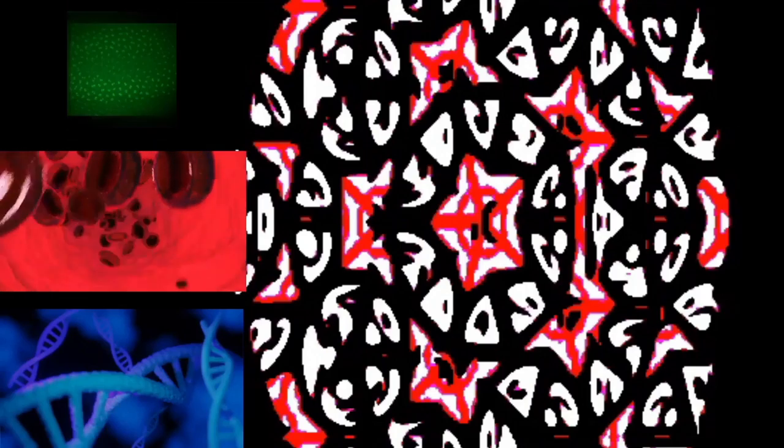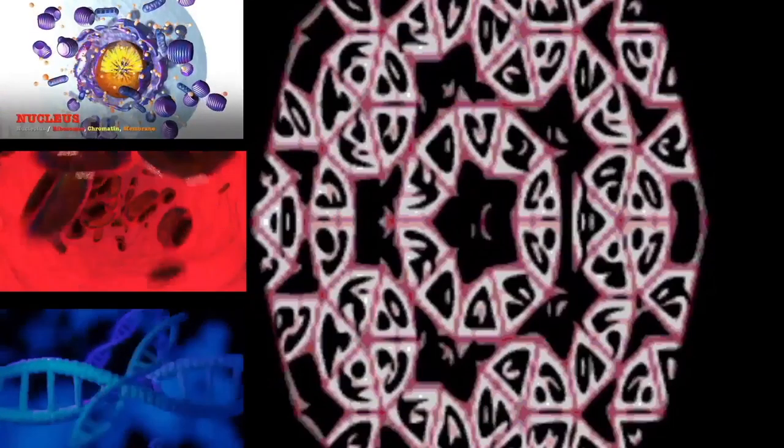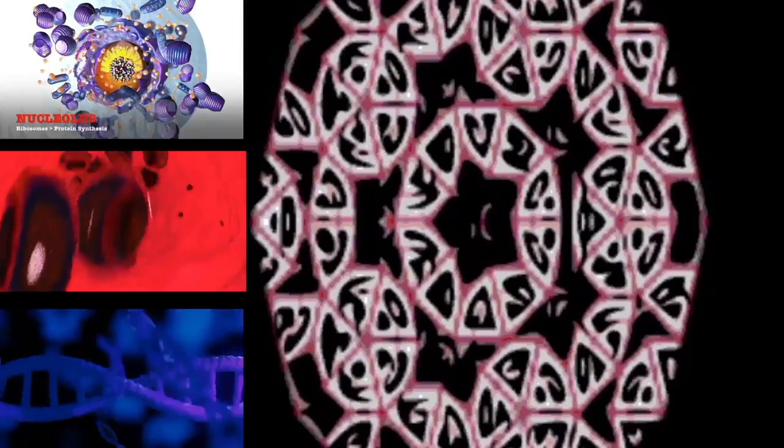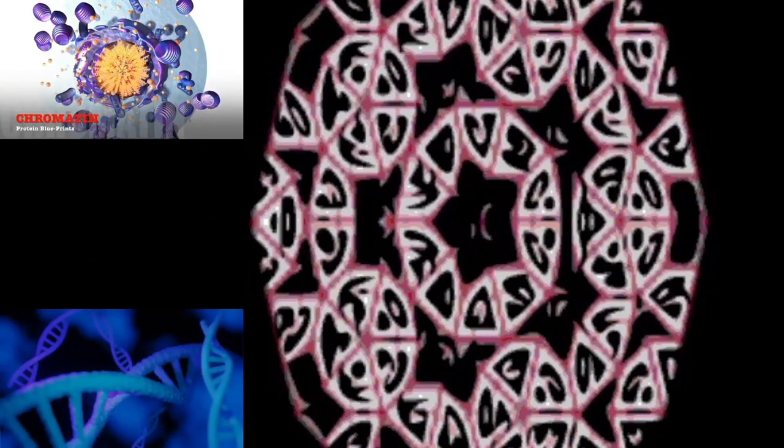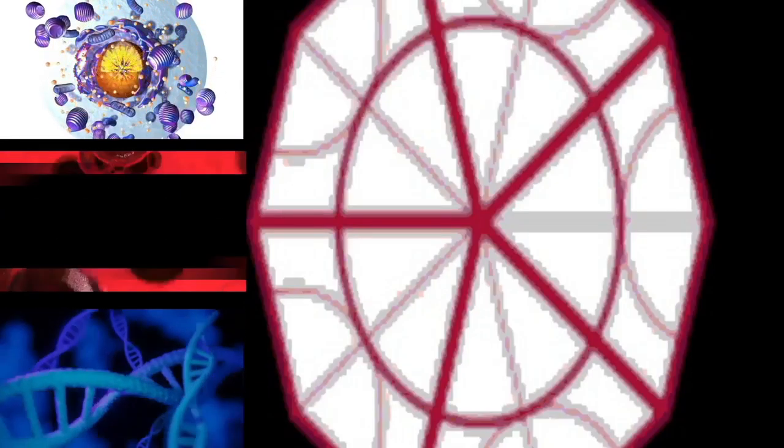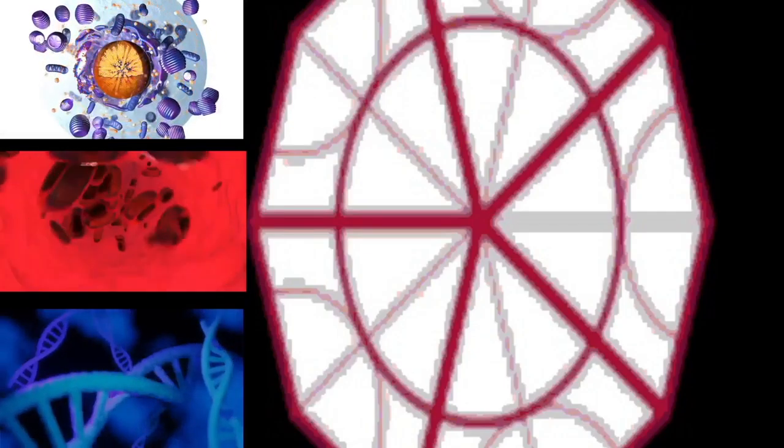During all three parts of interphase, the cell grows by producing proteins and cytoplasmic organelles. However, chromosomes are replicated only during the S phase. Thus, a cell grows (G1), continues to grow as it duplicates its chromosomes (S), grows more and prepares for mitosis (G2), and finally divides (M) before restarting the cycle.